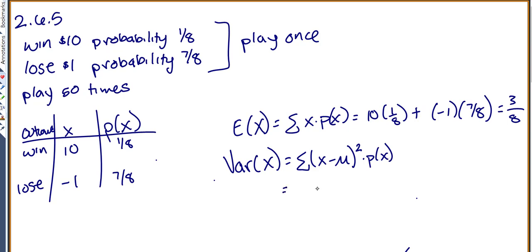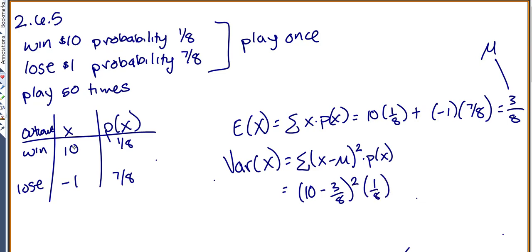So the first x value is 10 minus the mean of 3/8, squared, times its probability of 1/8. Plus, the next x value is negative 1 minus 3/8, squared, times its probability of 7/8.